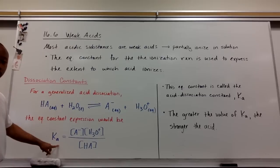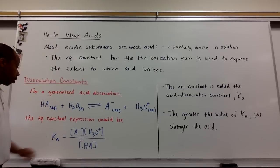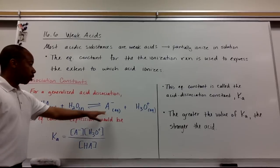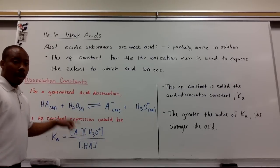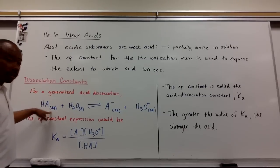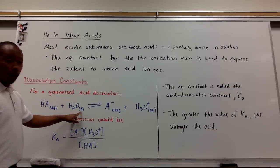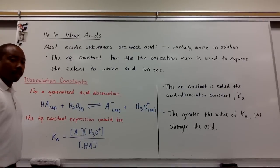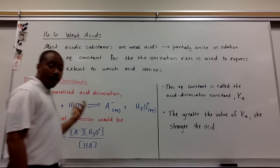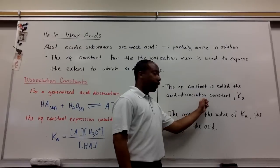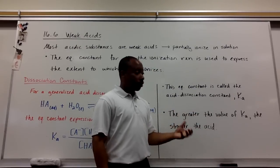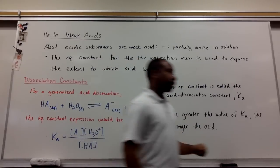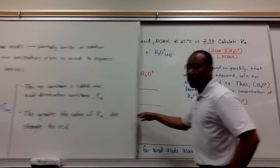K sub A is the equilibrium constant of a weak acid. A means acid. K sub A equals my products over reactants in terms of their concentrations. My products: A- and H3O+. My reactants: my acid and my base, water. However, my base is in the liquid form, and we do not put that in our equilibrium expression, so we just have this for K sub A.